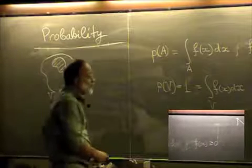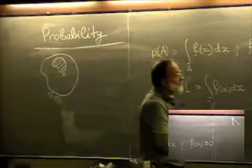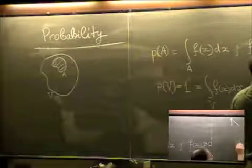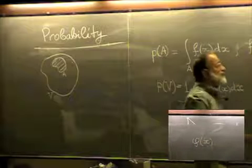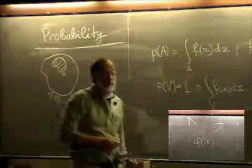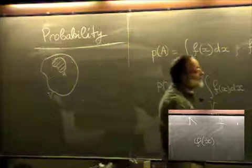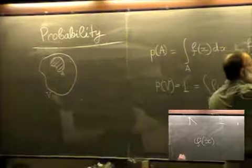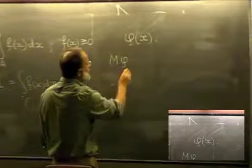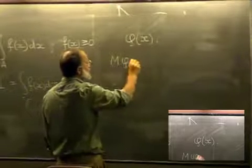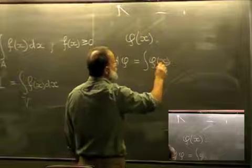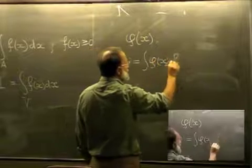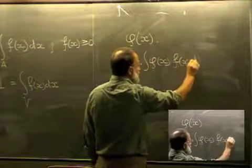Given some function φ(x) of the random event, the mathematical expectation of φ is, by definition, the integral of φ(x) f(x) dx over the region V.